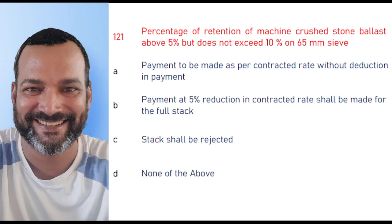When the percentage retention of machine crushed stone ballast is above 5% but does not exceed 10% on the 65 mm sieve, payment at 5% reduction in contractor rate shall be made for the full stock. The right answer is option B.